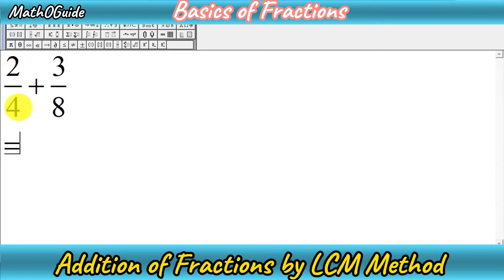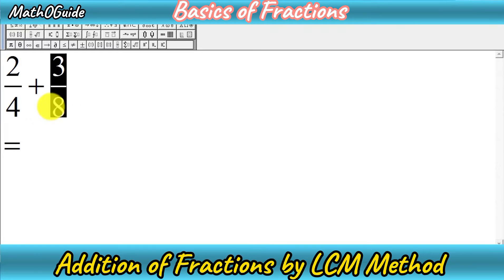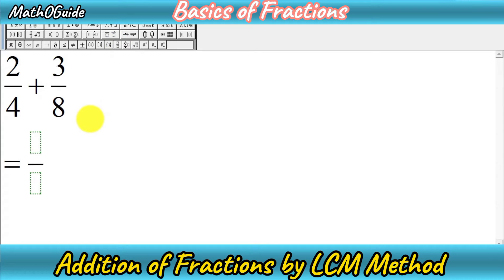In this first type of question, we have denominators which have common factors. Here we can see that 4 and 8 have common factors. To add them by LCM, you simply have to find the least common multiple of the denominators — 4 and 8.